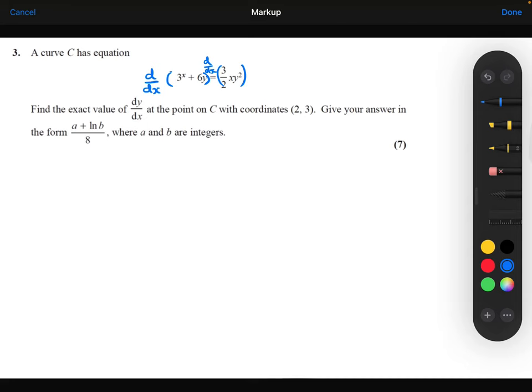What that's going to mean is I'm going to end up differentiating y terms with respect to x, which is fine. I can do that because I can differentiate them with respect to y and then multiply that by dy/dx. So basically, whenever I differentiate a y term, multiply that by dy/dx.